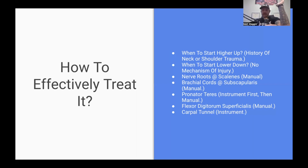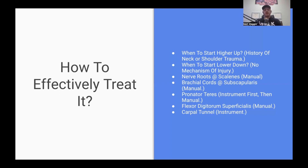After the brachial cords, I work my way down and get into the pronator teres. I like to do some instrument work there first to free up the top layer and open that up, then follow up manually. Next I treat the flexor digitorum superficialis, which is deeper — it's pretty hard to reach with an instrument since instruments only go about half an inch to an inch deep — so manual treatment is your best bet with that muscle.